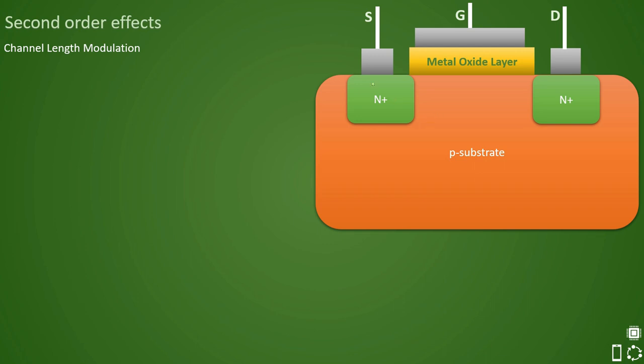Now the second effect that we are going to discuss is channel length modulation. We know that source is at negative potential and drain is at positive potential. So because of this a channel will be formed and gate is turned on then transistor will start to switch.